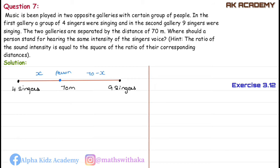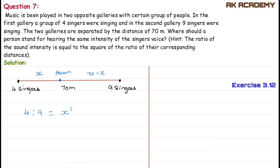For the same intensity, the distances must satisfy the ratio equation. Since the intensity ratio equals the square of the distance ratio, we write: 4 by 9 is equal to x squared divided by (70 minus x) the whole square.